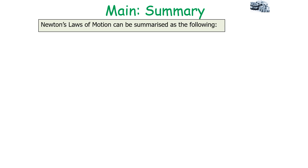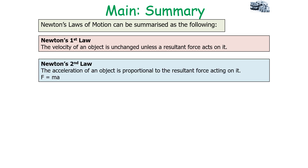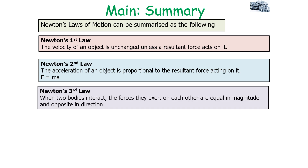Newton's laws of motion can be summarized as follows. Newton's first law: the velocity of an object is unchanged unless a resultant force acts on it. Newton's second law: the acceleration of an object is proportional to the resultant force acting on it — F equals ma. Newton's third law: when two objects interact, the forces they exert on each other are equal in magnitude and opposite in direction.